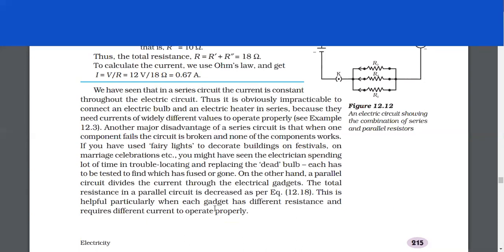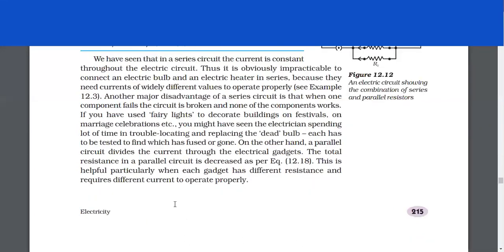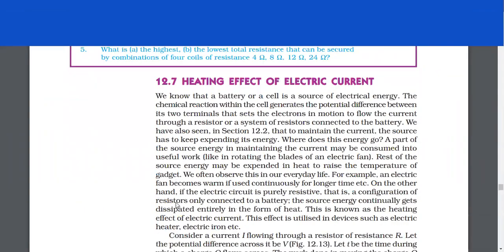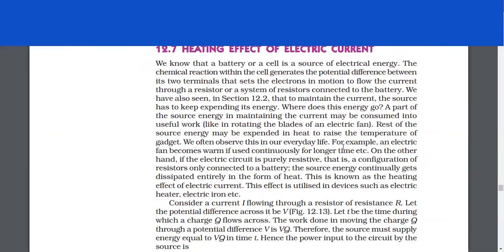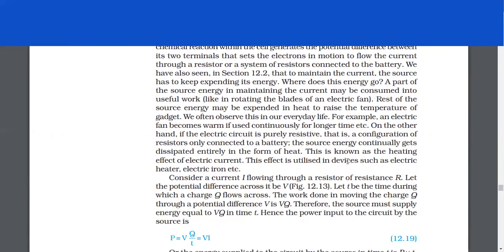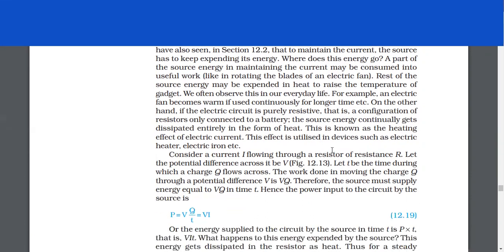Heating effect of electric current. We know that a battery or a cell is a source of electrical energy. The chemical reaction within the cell generates the potential difference between its two terminals that sets the electrons in motion to flow the current through a resistor or a system of resistors connected to the battery. To maintain the current, the source has to keep expending its energy. A part of the source energy may be consumed into useful work. The rest of the source energy may be expended in heat to raise the temperature of the gadget. For example, an electric fan becomes warm if used continuously for a longer time. If the electric circuit is purely resistive — a configuration of resistors only connected to a battery — the source energy continually gets dissipated entirely in the form of heat. This is known as the heating effect of electric current.